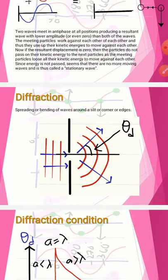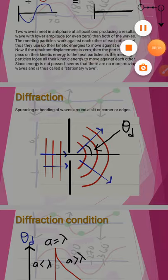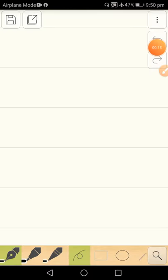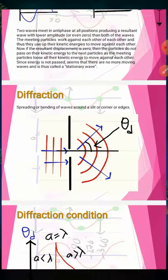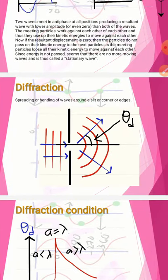Next, we are going to discuss about diffraction and then interference in more details. So, what is diffraction? Diffraction is the bending of waves or spreading of waves around slits, corners, or edges or anything else.